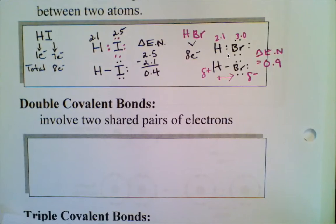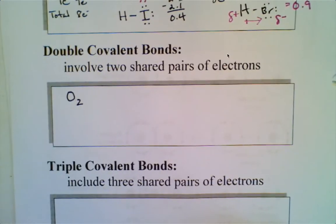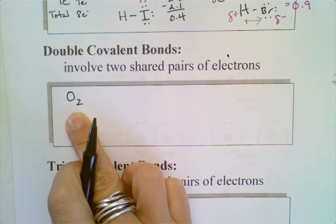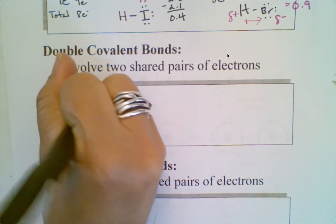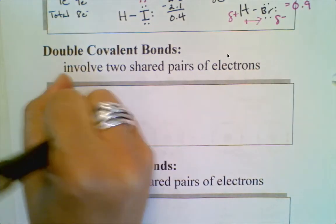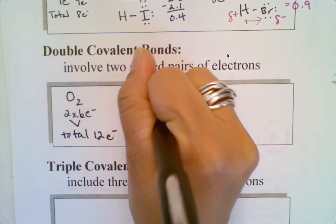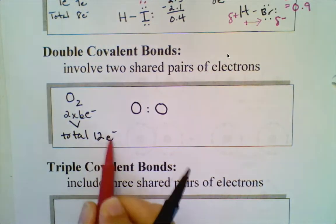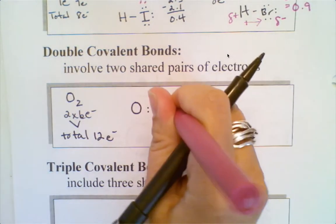When we take a look at double covalent bonds, we can use diatomic oxygen as our example, so O2. Oxygen is in the sixth family so when we go to figure out the number of electrons, it's in the sixth family so it has six valence electrons, but there's two of them, so two times six electrons gives me a total of 12 electrons to work with. So what we do is draw our oxygen and automatically put a pair in the middle.